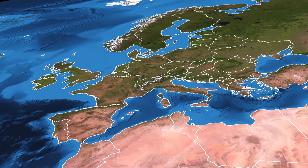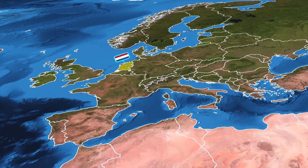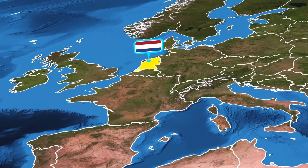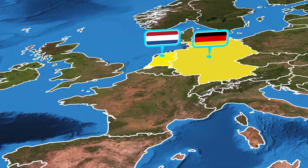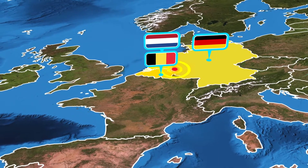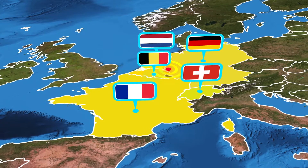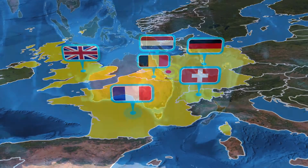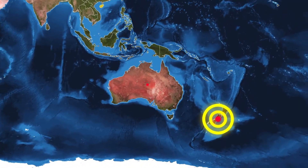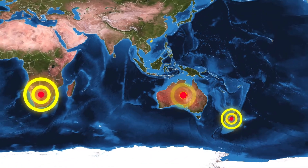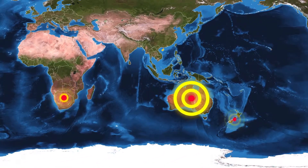Впервые была обнаружена в 1992 году в Нидерландах возле города Бексом, позже недалеко от границы с Германией и Бельгией. Затем вредителя нашли во Франции, Швейцарии и Великобритании. За пределами Европы мелодогино-фалакс отмечена в Новой Зеландии, Австралии и Южной Африке.